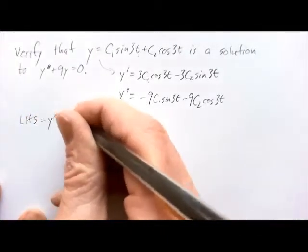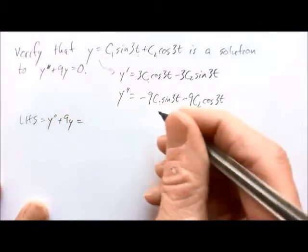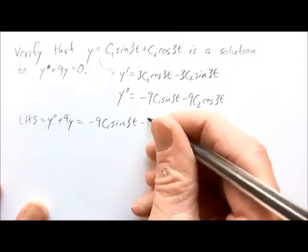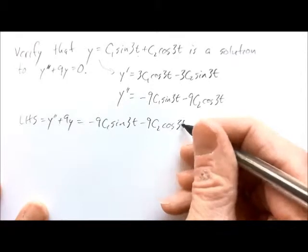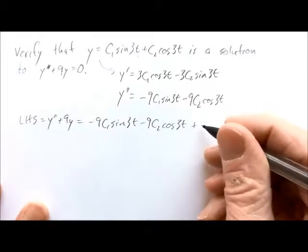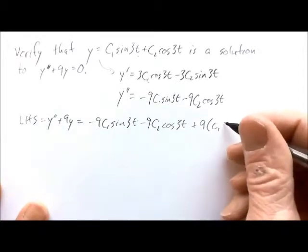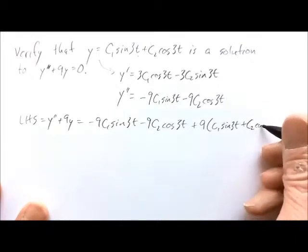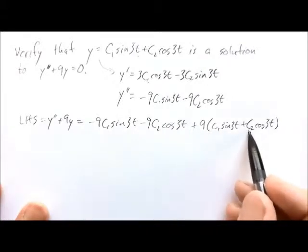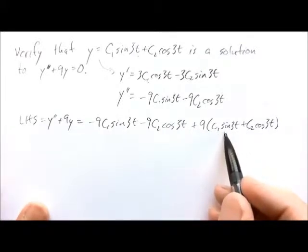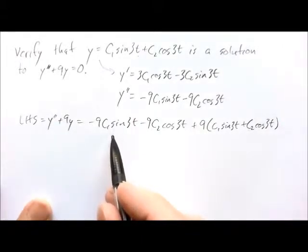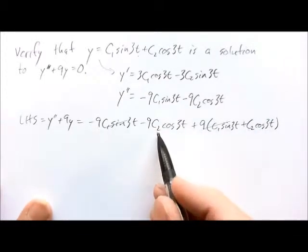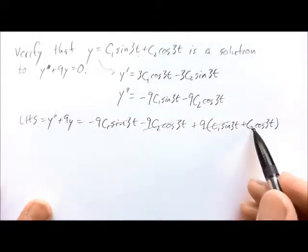We can now put the left-hand side together. The left-hand side is y double prime plus 9y. That gives us negative 9c1 sine 3t minus 9c2 cosine 3t, plus 9 times y which is c1 sine 3t plus c2 cosine 3t. Distributing the 9, we get positive 9c1 sine 3t, so those terms cancel.